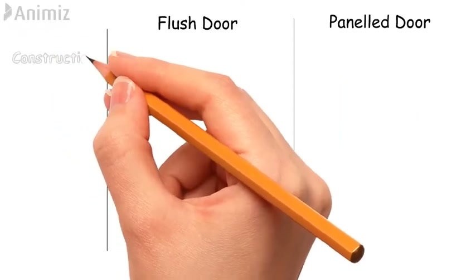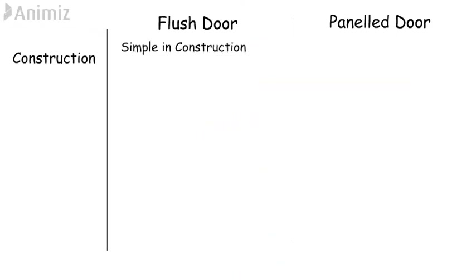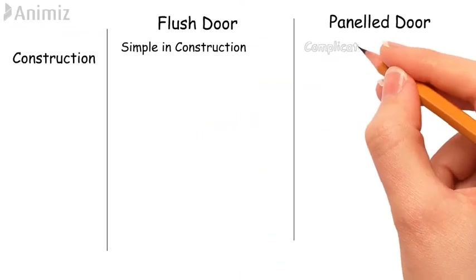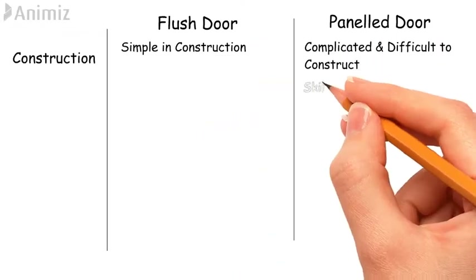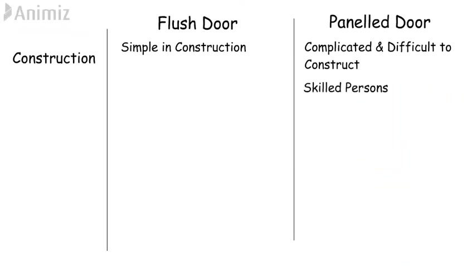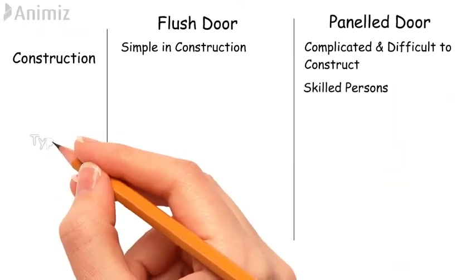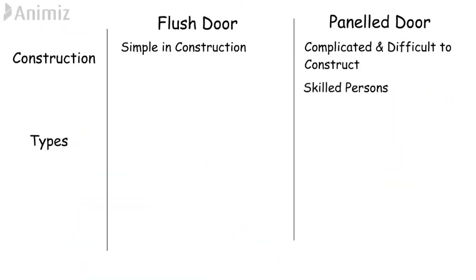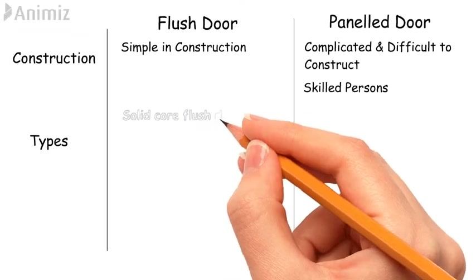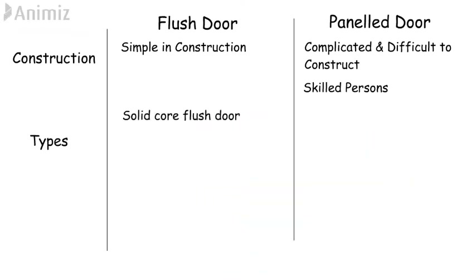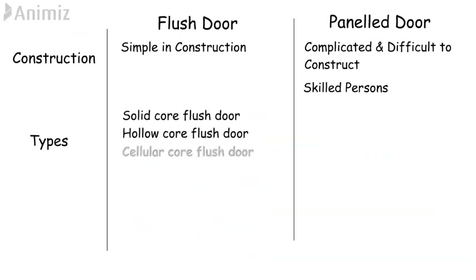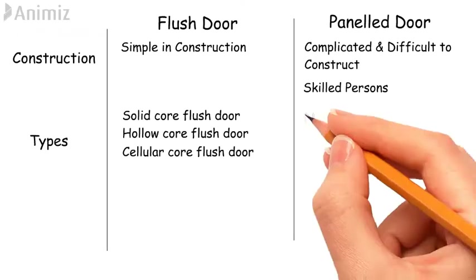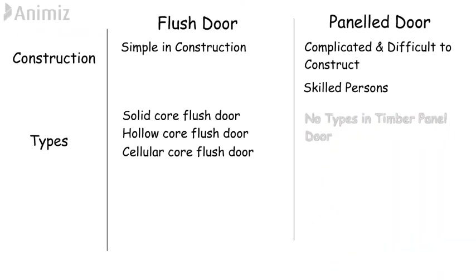Construction: Flush doors are simple in construction, whereas panel doors are difficult to construct — a skilled person is required to build a panel door. Types: Types of timber flush doors are solid core flush door, hollow core flush door, and cellular core flush door, whereas in the case of wooden panel doors, there are no such types.